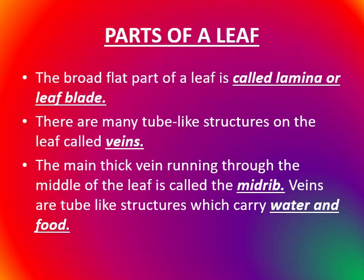The broad flat part of a leaf is called the lamina or leaf plate. There are many tube-like structures on the leaf called veins. The main thick vein running through the middle of the leaf is called the midrib. Veins are tube-like structures which carry water and food.